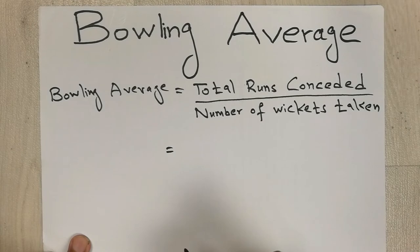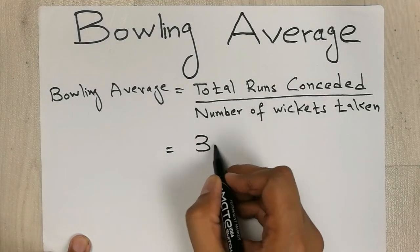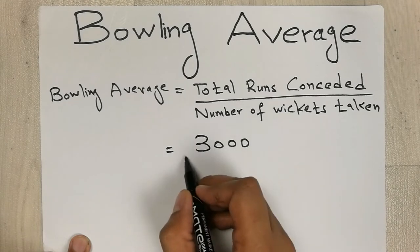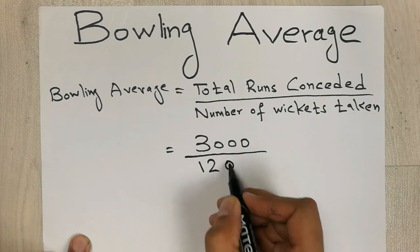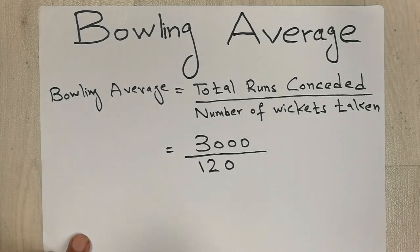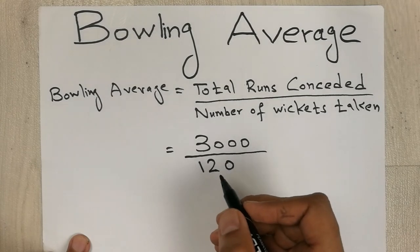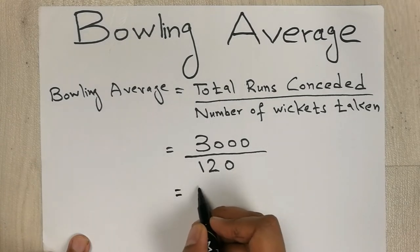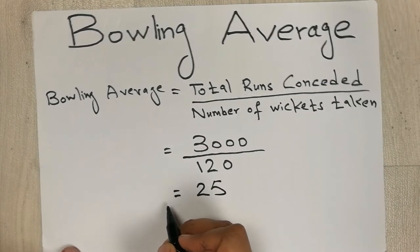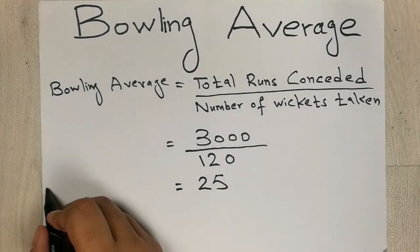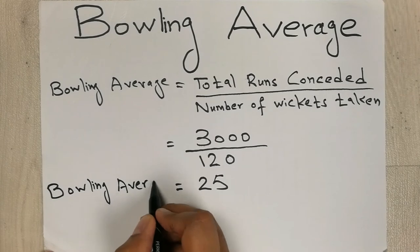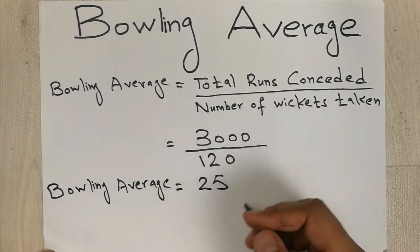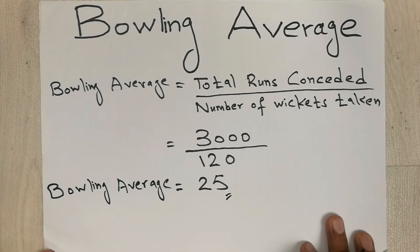For example, if the total runs conceded are 3000 and the number of wickets taken are 120, then we do 3000 divided by 120 and our answer will be 25. So this is our bowling average.